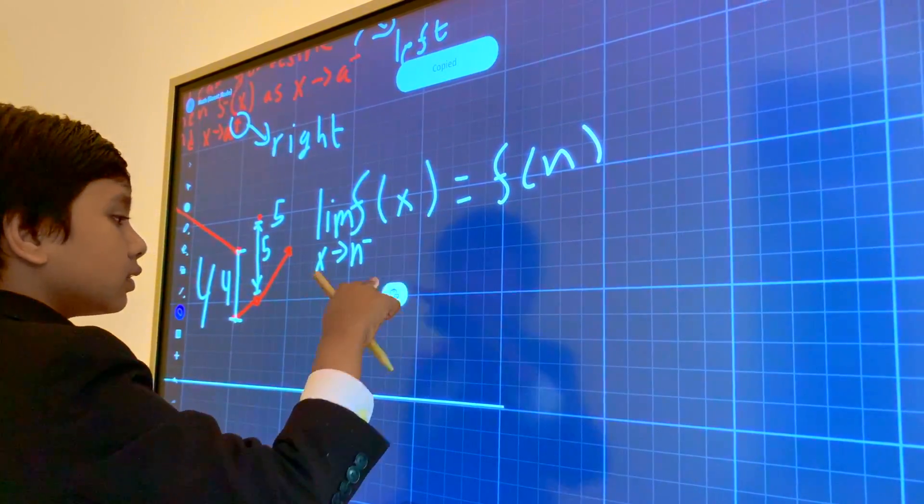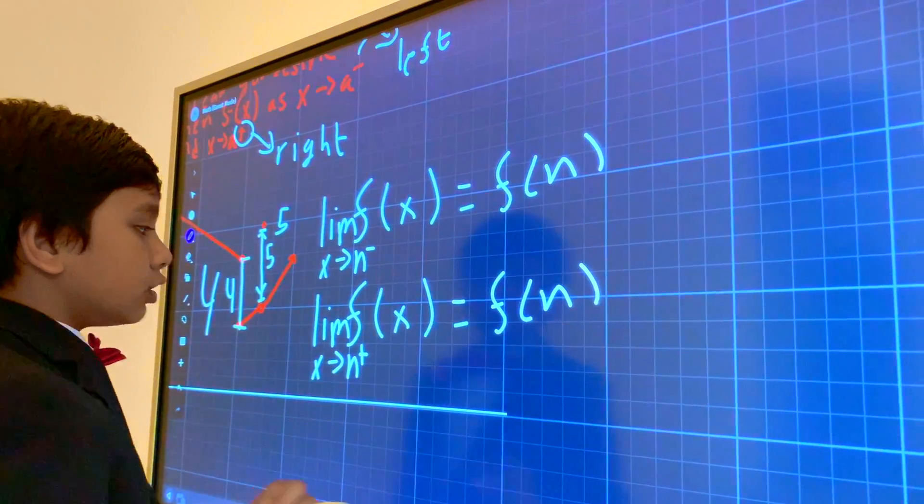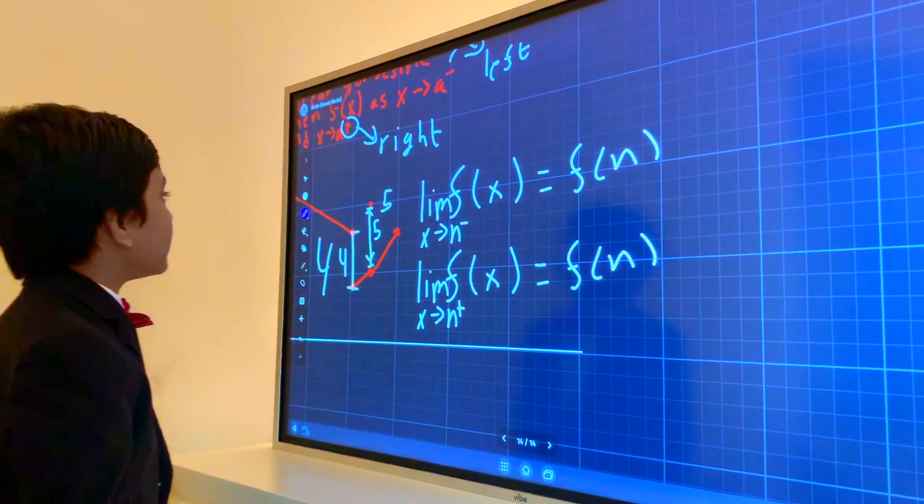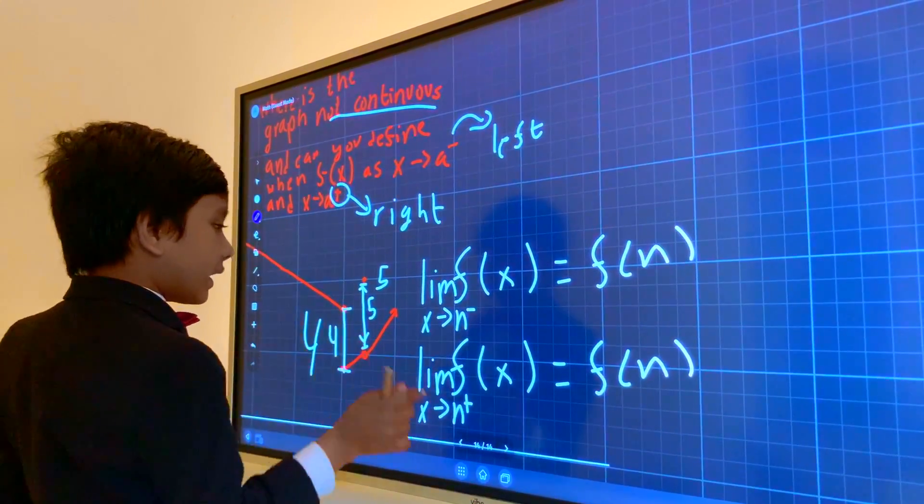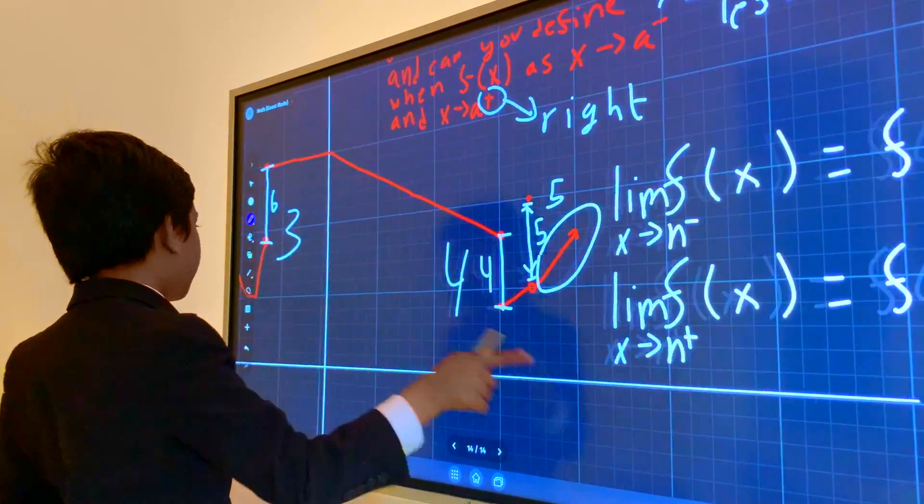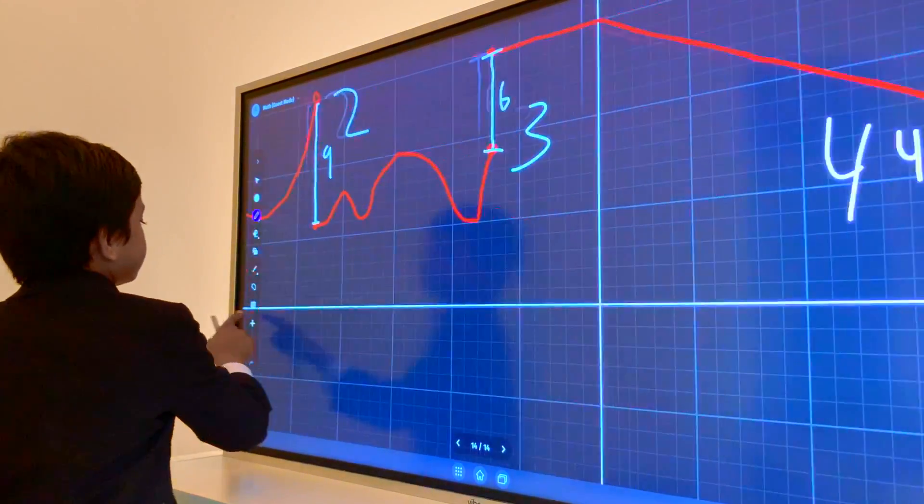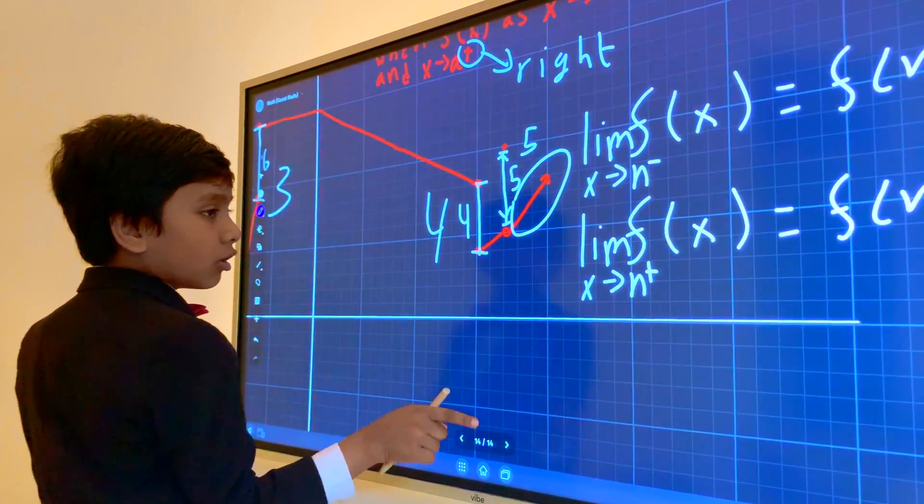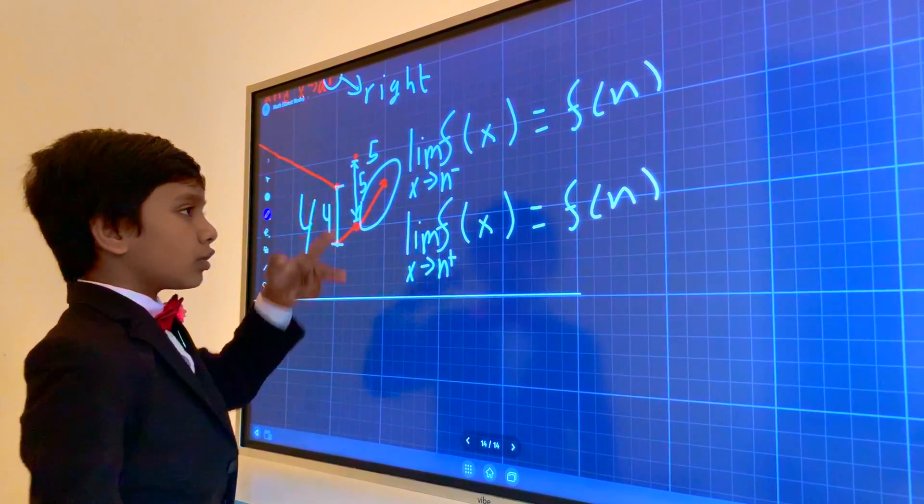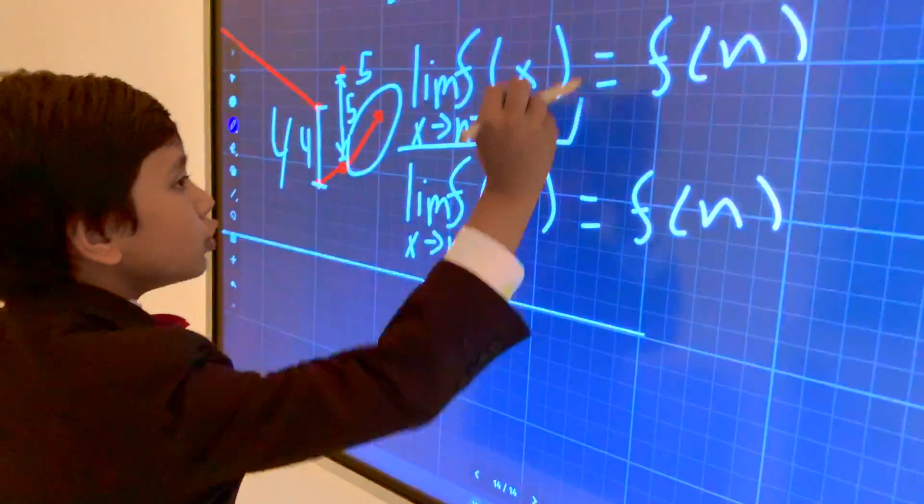And this also has to be true for the plus side. And these two equations make sure that everything else is continuous. One part of the function is continuous like this part over here or this part right over here.